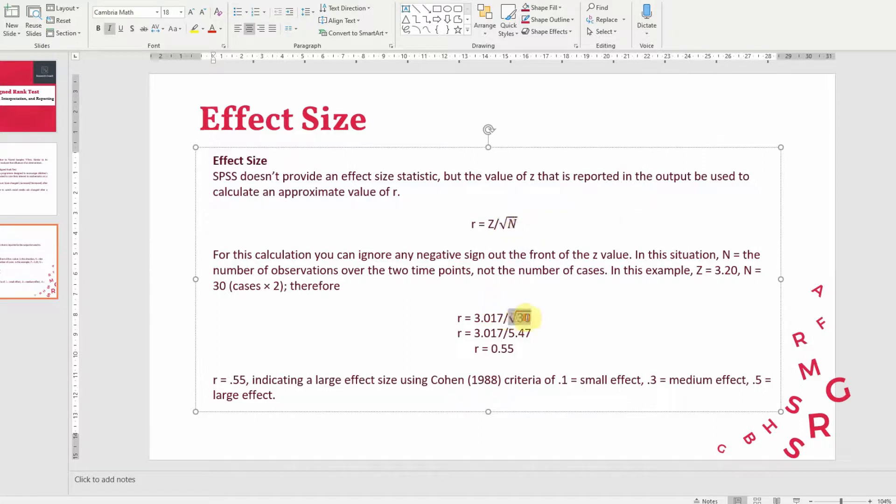In this case, the n is multiplied by 2 because there are 15 cases before and 15 cases afterwards, so 30. 3.017 is our z value. We do not need to add the negative sign, and the result is 0.55.